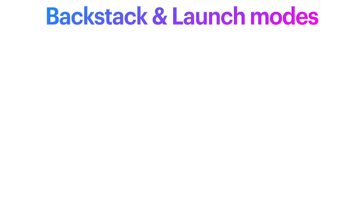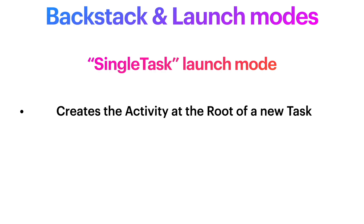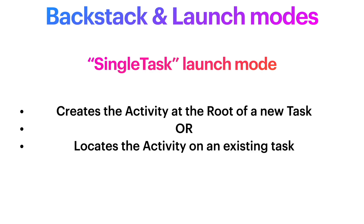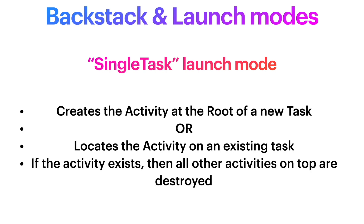Moving on to the SingleTask launch mode. The system creates the activity at the root of a new task or locates the activity on an existing task. If an instance of the activity already exists and is at the root of the task, then the system sends the intent to the existing instance through a call to the onNewIntent method rather than creating a new instance. Meanwhile, all other activities on top are destroyed. For example, if we have A, B, C and we want to launch A again as SingleTask, then C and B would be destroyed and A would be back on top, receiving the intent through the onNewIntent callback.